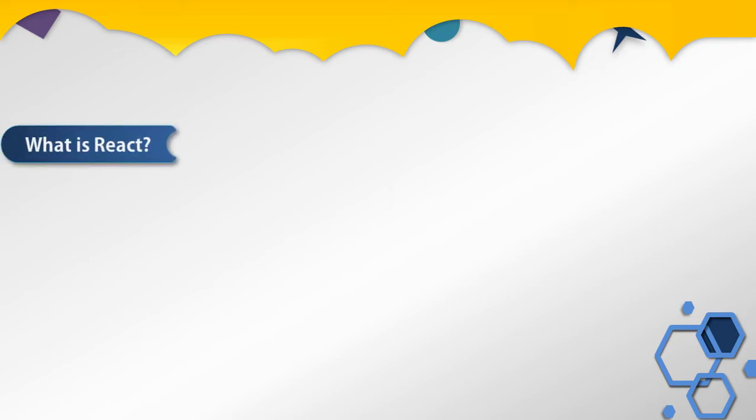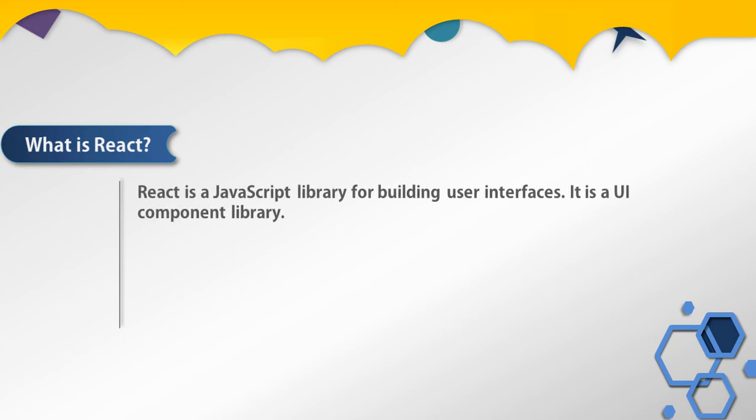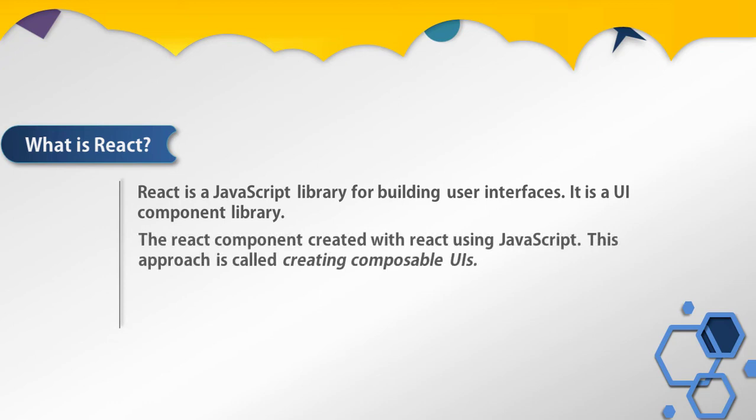Now that you have a better understanding of React's history, let's look at what React is. In simple words, React is a JavaScript library for building user interfaces. It is a UI component library. A React component is created using JavaScript, and this approach is called creating composable UIs.